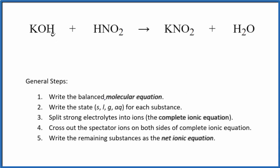To write the balanced net ionic equation for KOH plus HNO2, that's potassium hydroxide plus nitrous acid, we first balance the molecular equation. In this case, it's already balanced, so that's kind of nice.